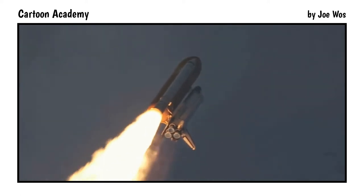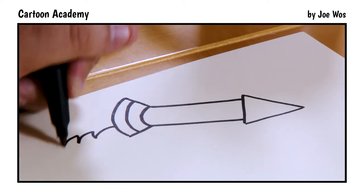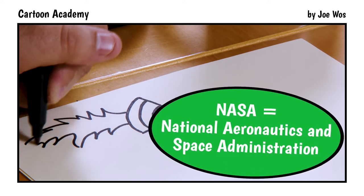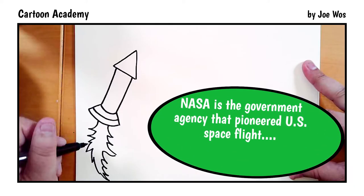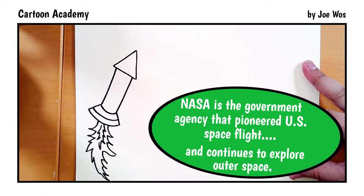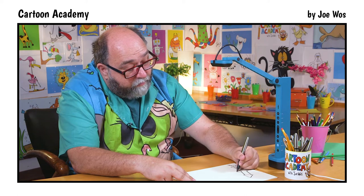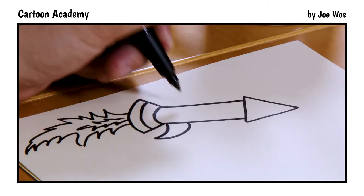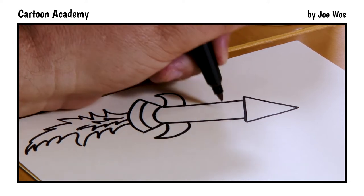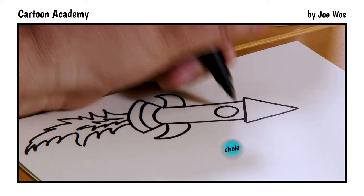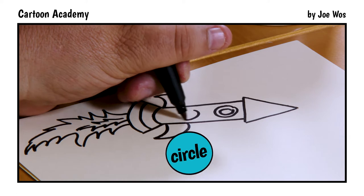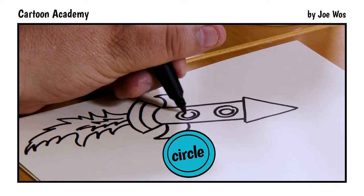We're going to get some flames shooting out of that base. And then the interior or inside of the flames look like that. Out, down, and in. Out, down, and in. And then some port holes. Circle. Circle inside. Circle. Circle inside.